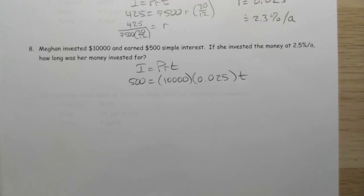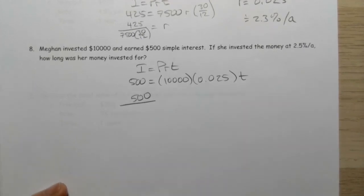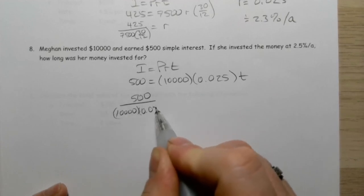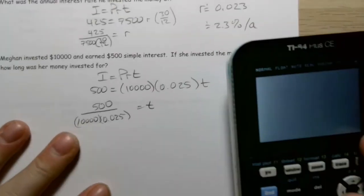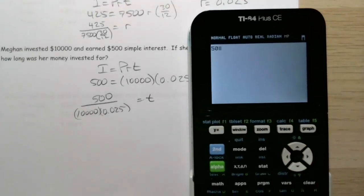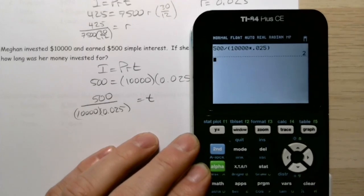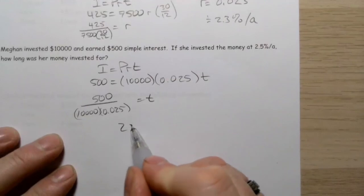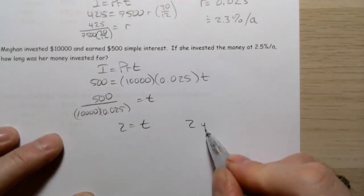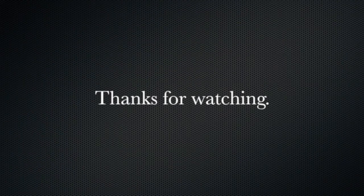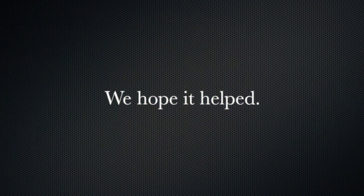I'll divide 500 by 10,000 multiplied by 0.025. On my calculator, that's 500 divided by, in parentheses, 10,000 multiplied by 0.025. I get 2. Because my units are in years, that means it took 2 years to earn that $500 in interest.